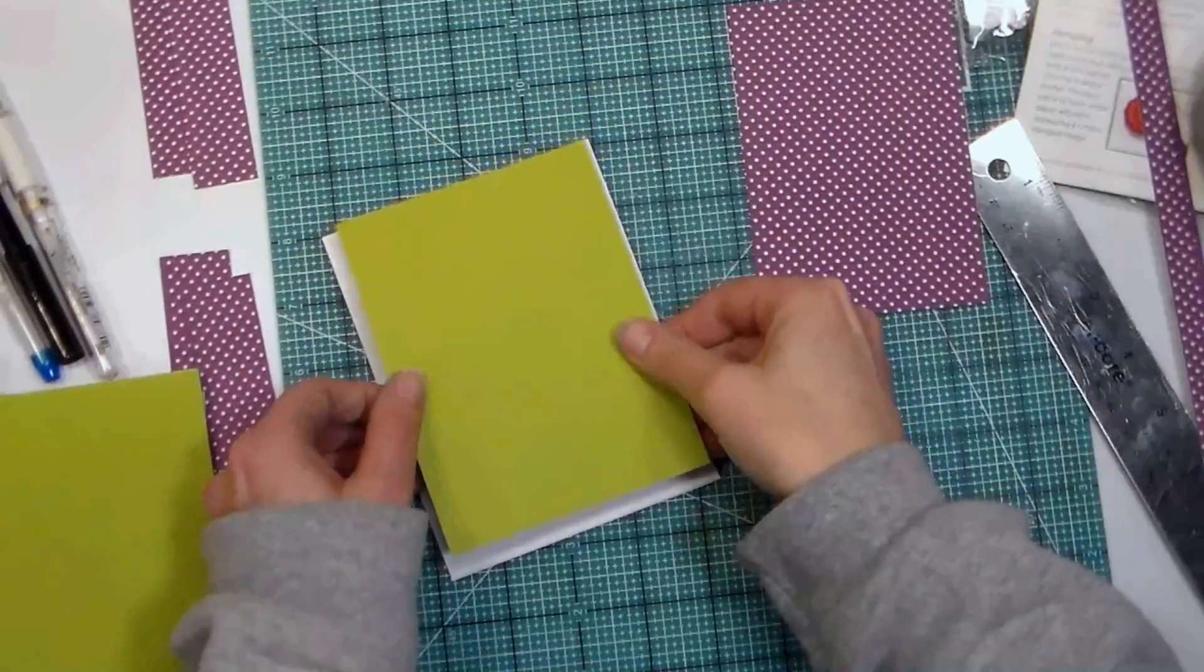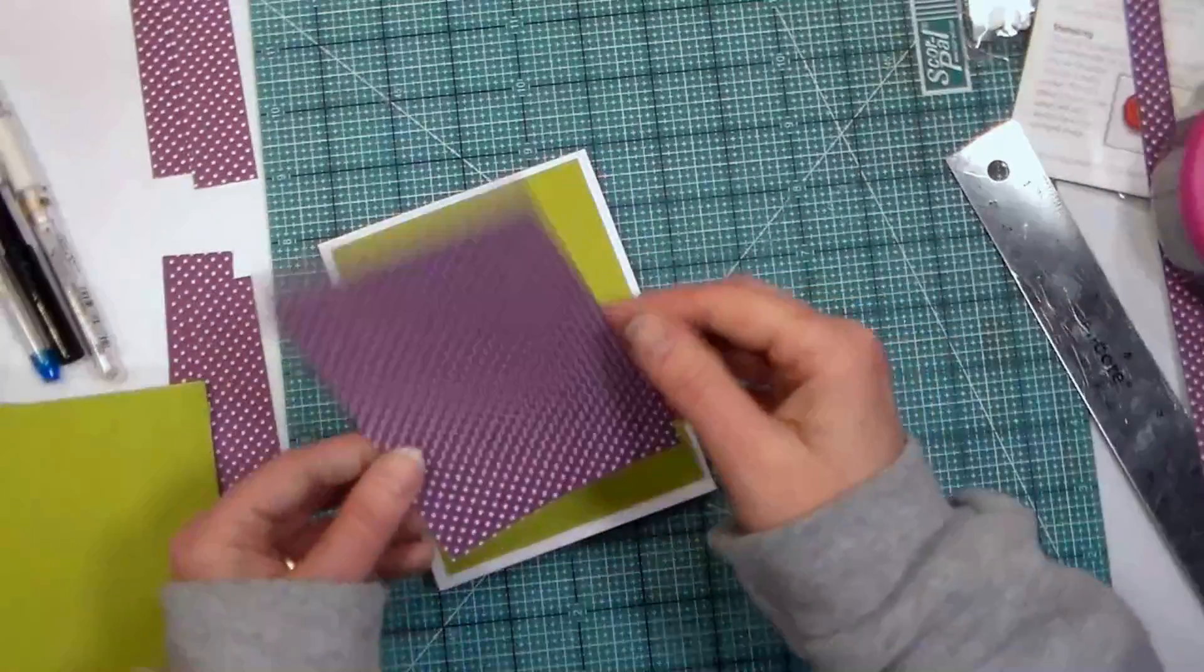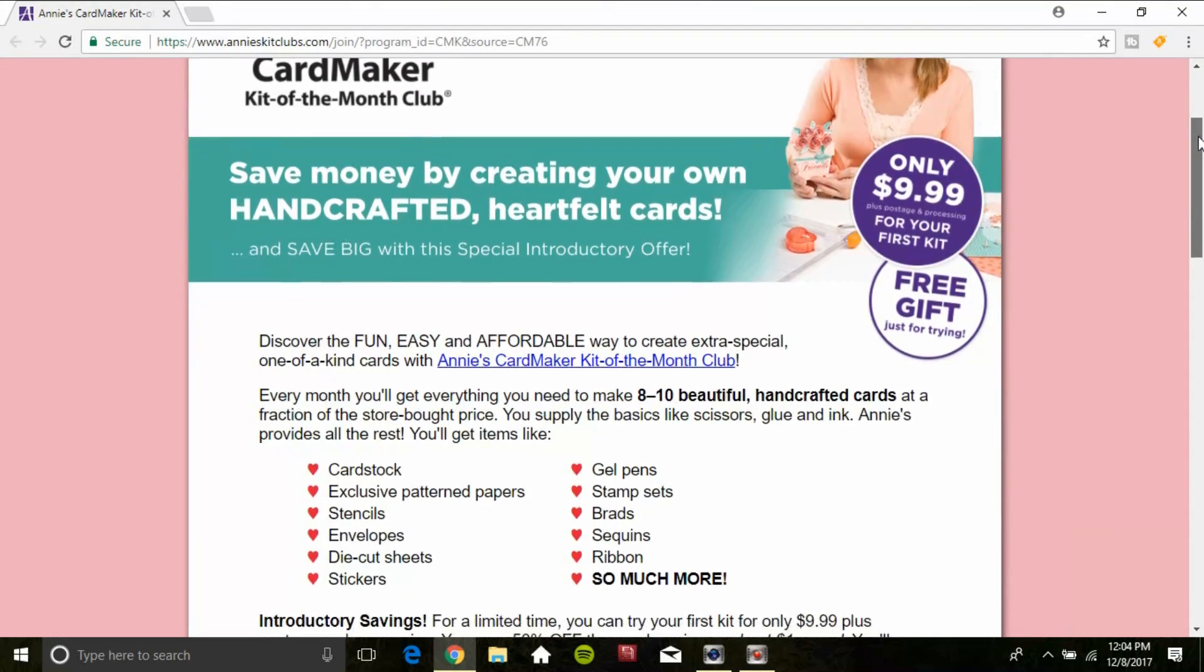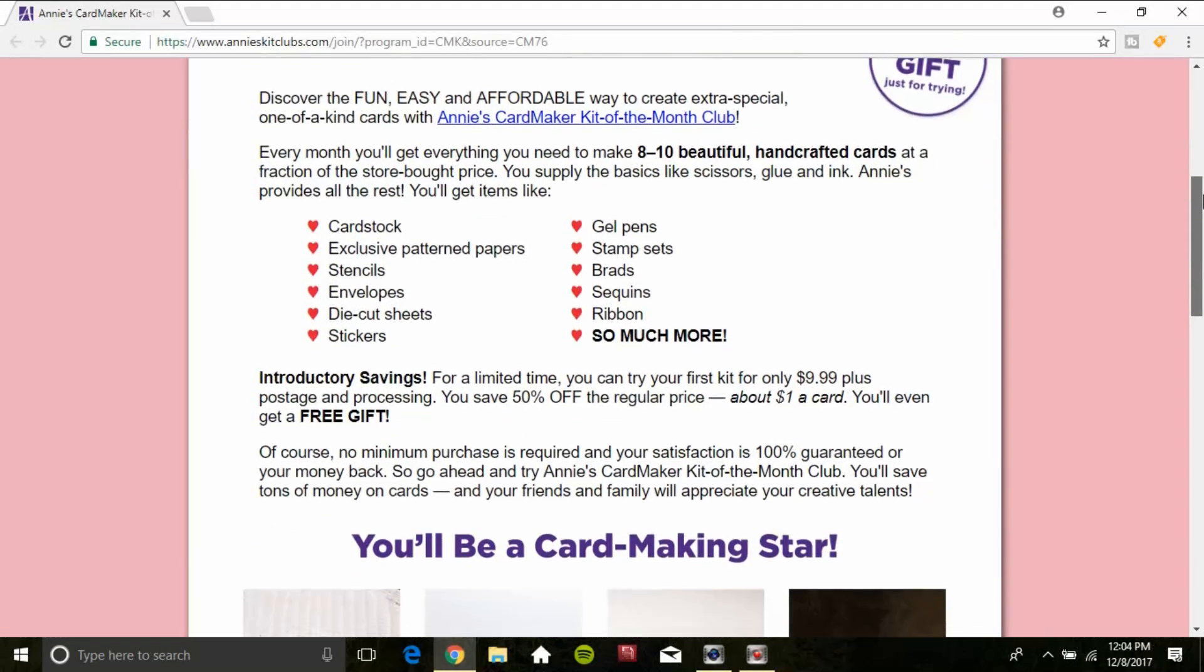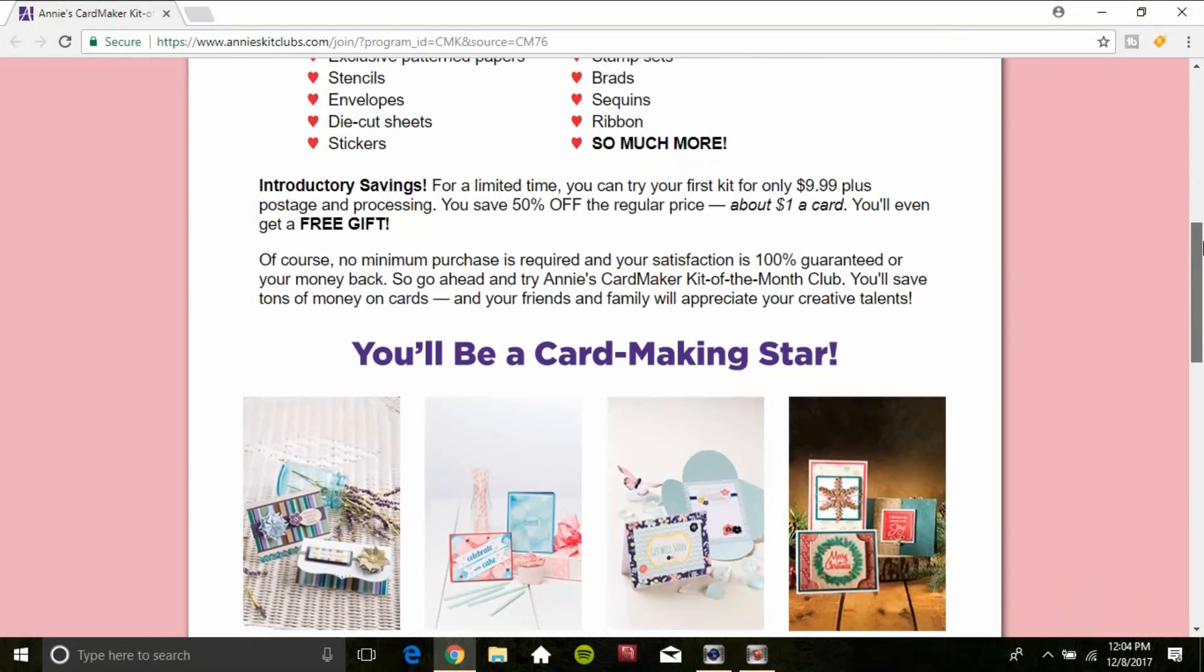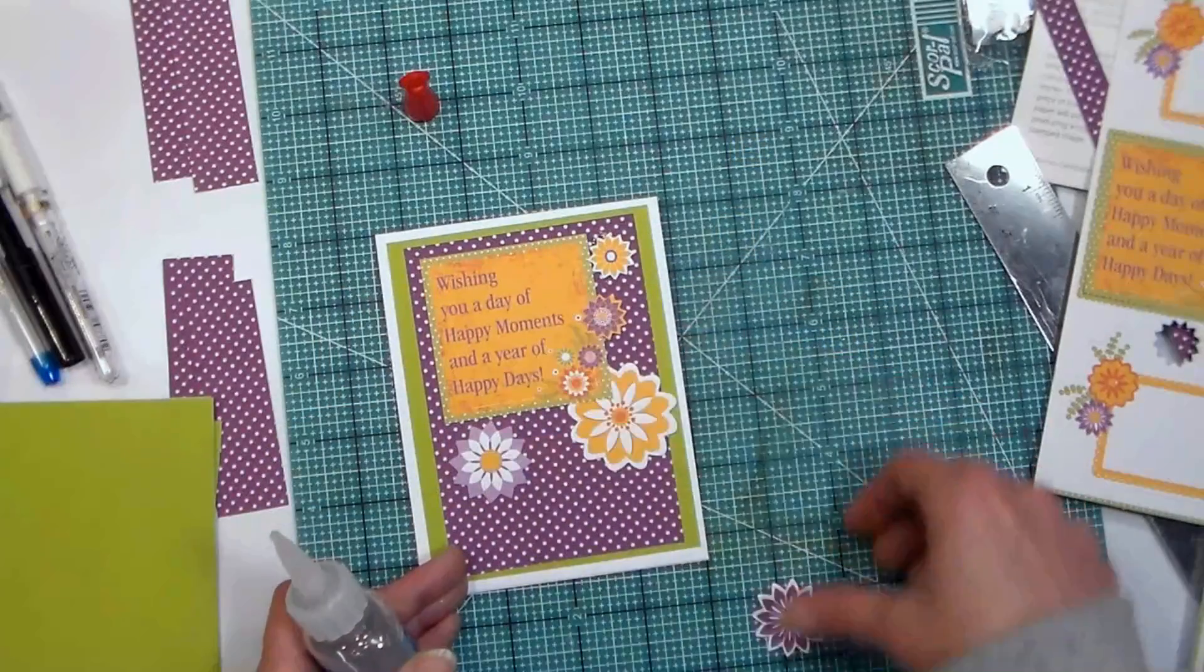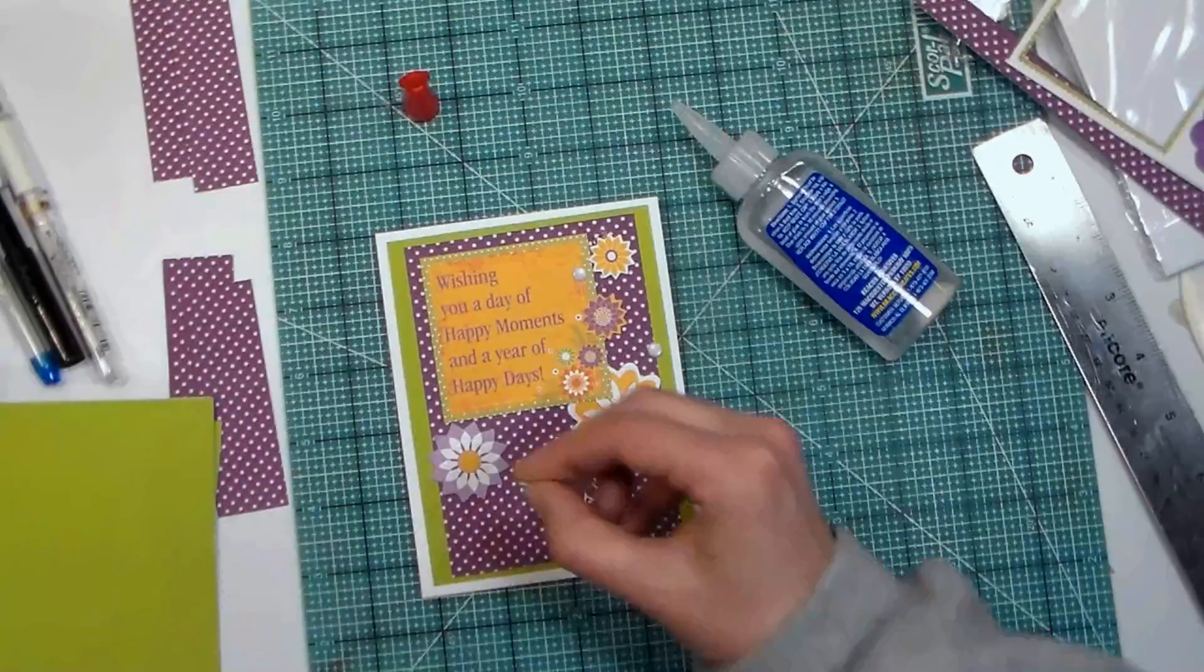That pretty much completes your box, so I thought it'd be fun to make some cards to go in there and also introduce you to our sponsor, Annie's Card Maker Kit of the Month Club. Every month you'll get everything you need to make 8 to 10 beautifully handcrafted cards at a fraction of the store-bought price. You supply the basics like scissors, glue, and ink, and Annie's provides all the rest. You'll get items like cardstock, exclusive pattern papers, stencils, envelopes, die-cut sheets, stickers, gel pens, stamp sets, brads, sequins, ribbons, and so much more.